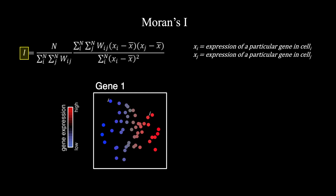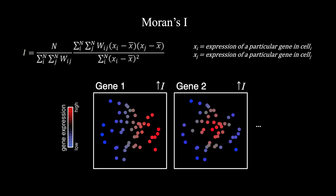If we loop through all possible combinations of cells I and J and sum up their contributions, the Moran's I statistic for this gene will be generally quite large. See if you can repeat this exercise on your own for gene 2.